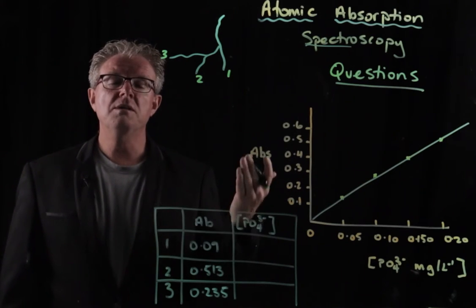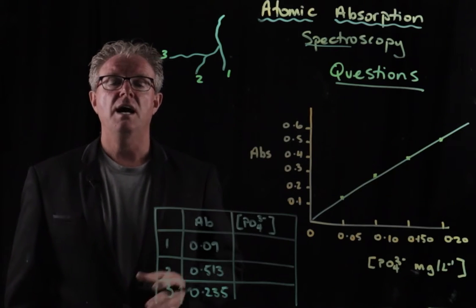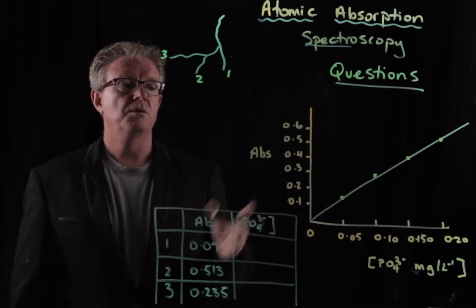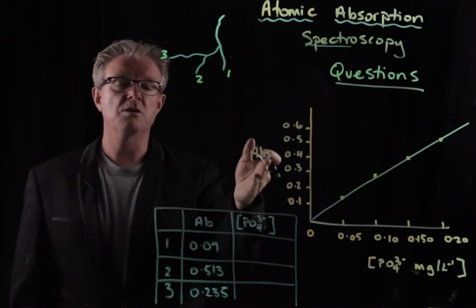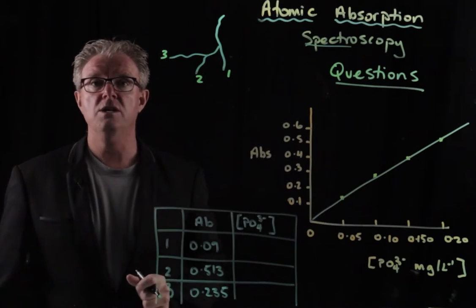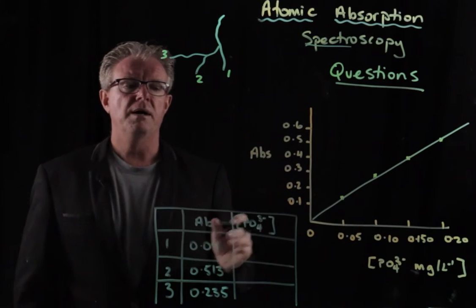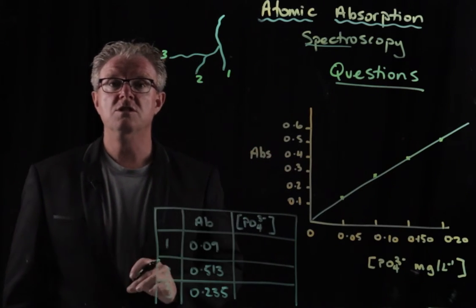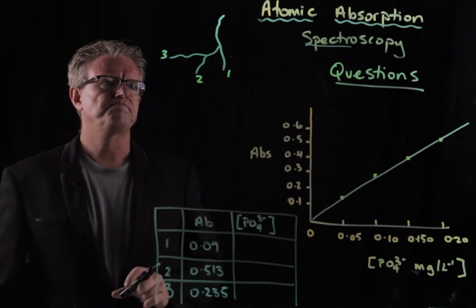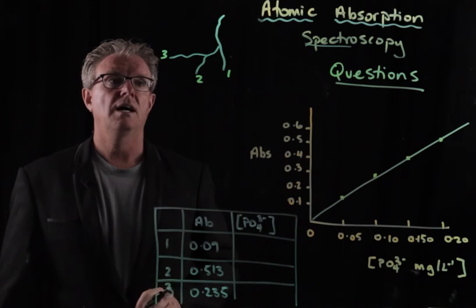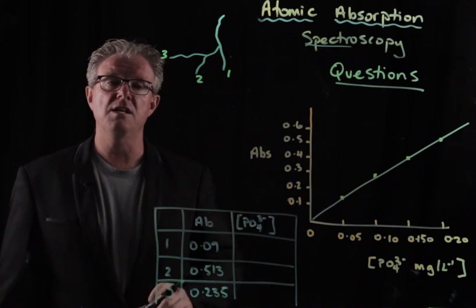But it's normally measured by using a colorimeter, which has a similar sort of setup in the sense of measuring absorbance and relating that to concentration. But atomic absorption spectroscopy is usually done with metal ions. But this was done in the paper, so we're going to go through with the question and look at the answers.